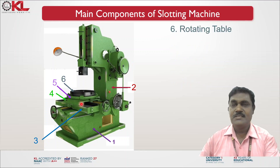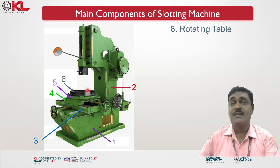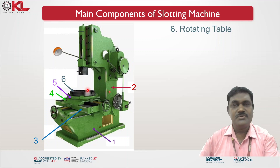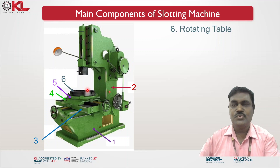The sixth component is the rotating table. This is a circular rotating table where work pieces are mounted with the help of vises or T-slots with clamps. Different clamping arrangements can be used to fix the work pieces.